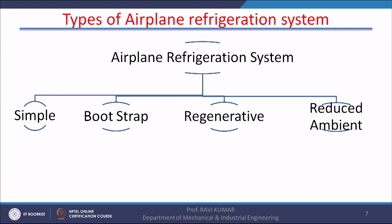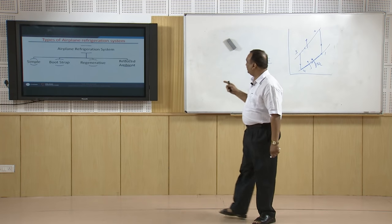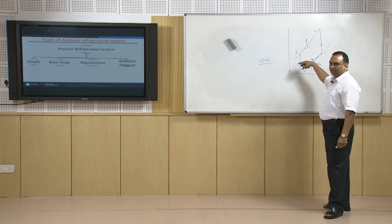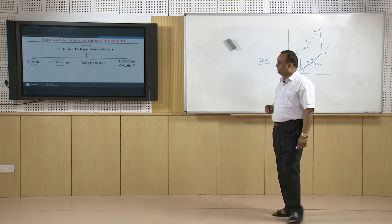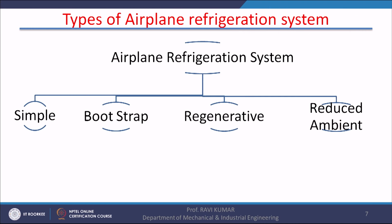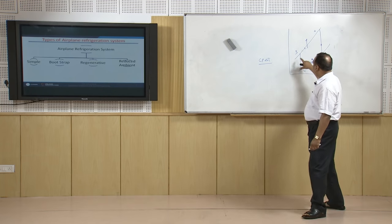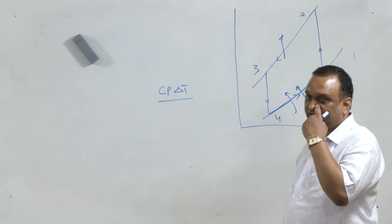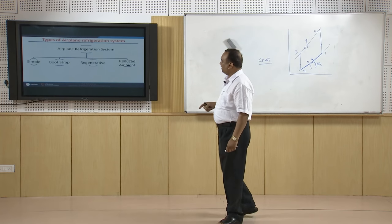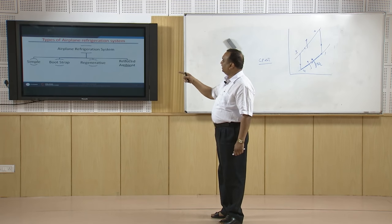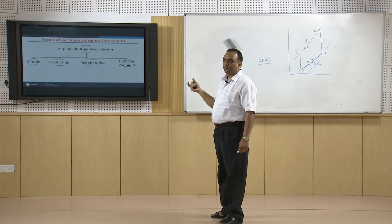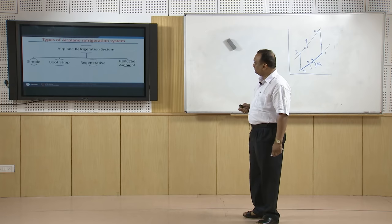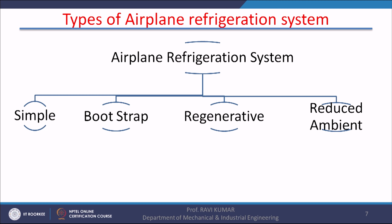Types of airplane refrigeration systems: there are four types — simple, bootstrap, regenerative, and reduced ambient. The simple system is a modification of the basic air refrigeration cycle. In the bootstrap system, the output of the expander is used for further compression of air to obtain maximum refrigerating effect. Both simple and bootstrap systems can also include evaporative cooling to further enhance performance. The third is the regenerative system and the fourth is the reduced ambient system.